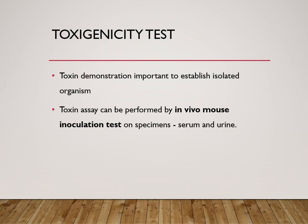For toxin toxicity testing, demonstrating the toxin is important when establishing the diagnosis. In vivo, we can do this on mice — that is the mouse inoculation test. You can inoculate the sample serum or urine for this test.